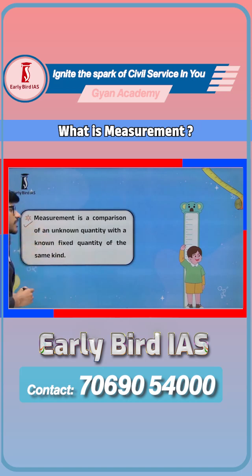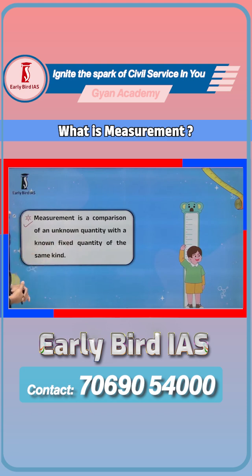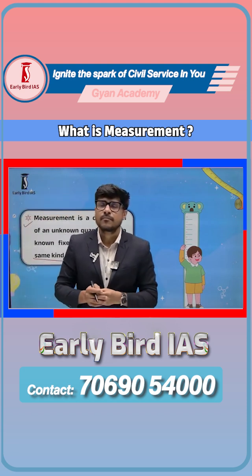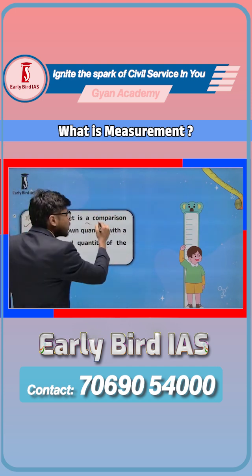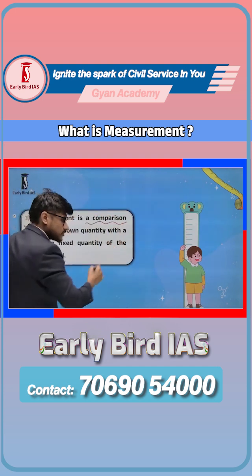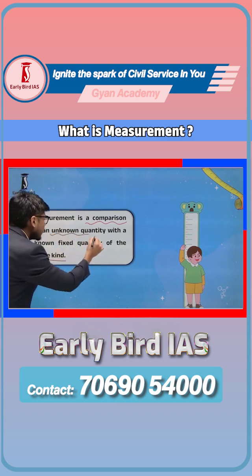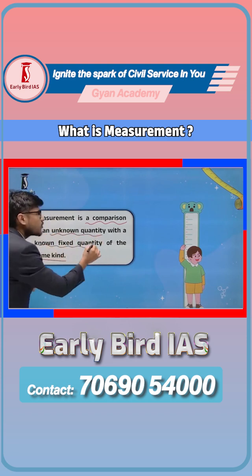Measurement is a comparison of an unknown quantity with a known fixed quantity of the same kind. Are you getting the definition? What is measurement? Measurement is one kind of comparison — you compare that unknown quantity with a known fixed quantity.